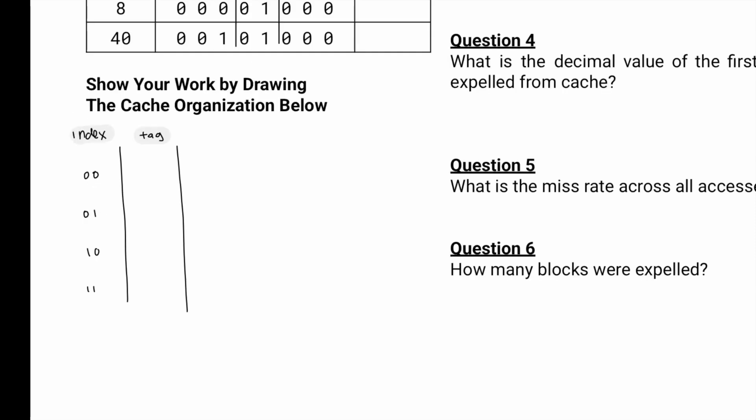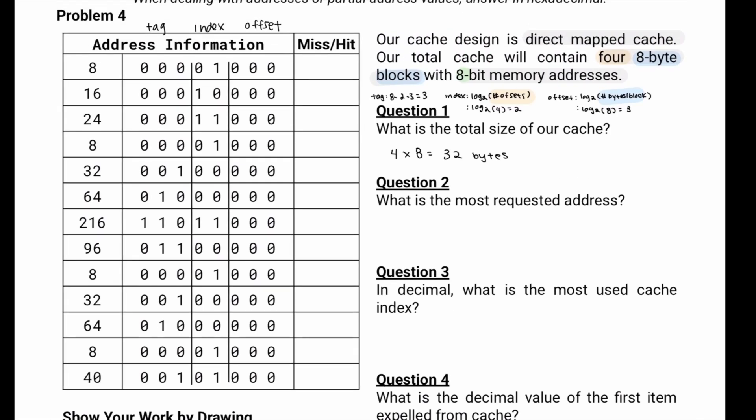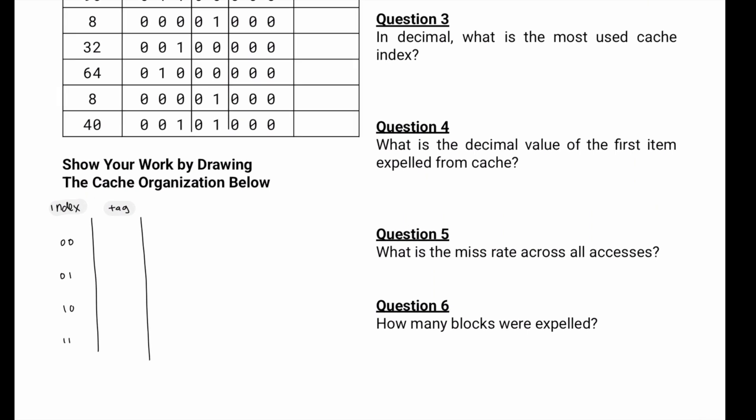And when we actually try to access the cache, what happens is that we're trying to compare the tag of the address we currently have with the tag of the index we're looking at. And if those two values aren't the same, then it's a miss.